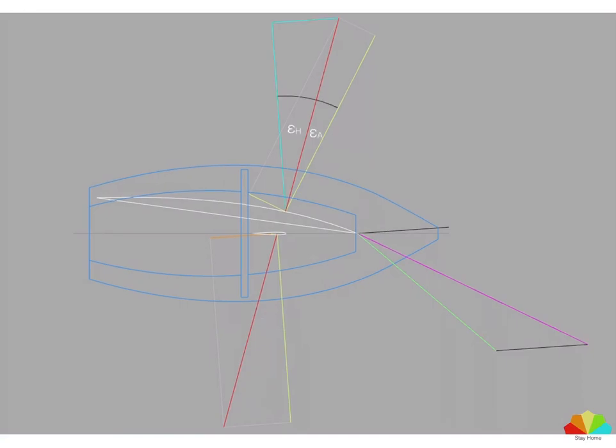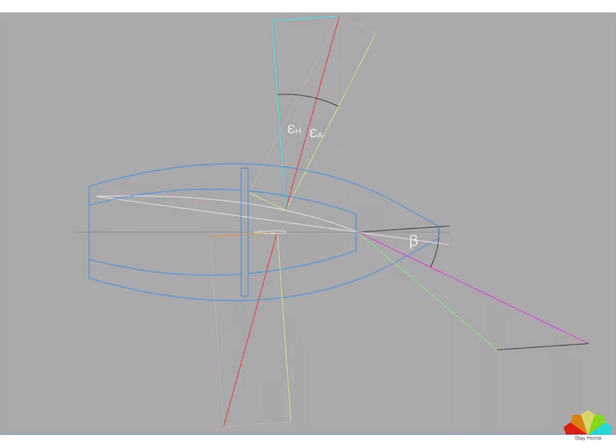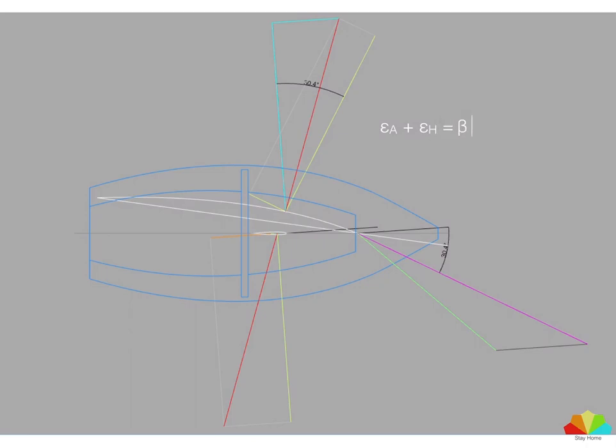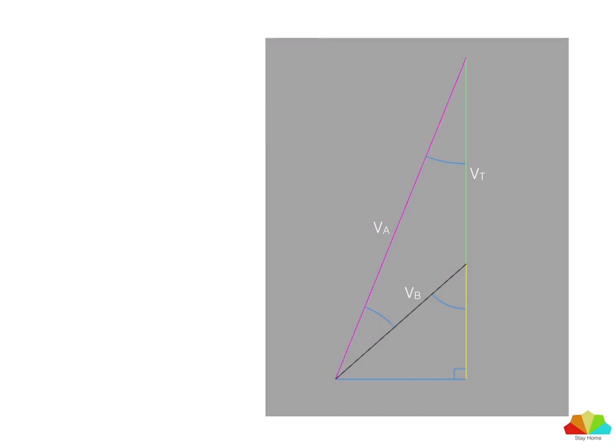So it turns out if we add together the aerodynamic and hydrodynamic drag angles, they equal beta, our apparent wind angle, which is itself made up of the angle of attack, the sheeting angle, and the leeway angle. There's proof: in this case both came out to 30.4 degrees. So just to reiterate, the sum of the aerodynamic and hydrodynamic drag angles is our apparent wind angle, which is itself set by the angle of attack, the sheeting angle, and the leeway angle.